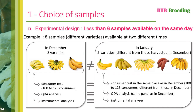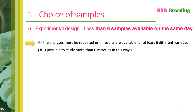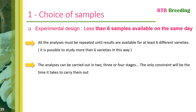The approach is therefore the same each time you analyze new samples. The consumer test is the same, even if the consumers are different. The QDA analysis will be the same, but it's very important to have the same panel members on the jury. When you have fewer than six samples available at the same time, you need to repeat the analysis as many times as necessary until you have results for six or more samples. The only constraint with this method is time, as repeating the different analyses several times can be very time-consuming.